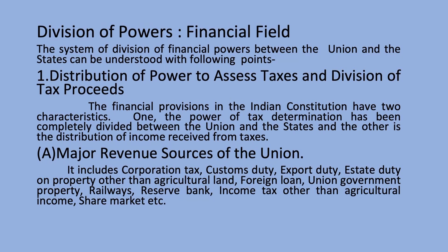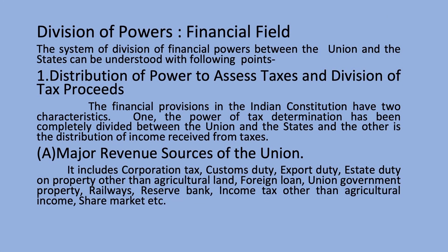Division of powers in the financial field: the system of division of financial powers between the union and the states can be understood through the following points. First, distribution of power to assess taxes and division of tax proceeds. The provisions relating to division of powers in the financial field are found in Part XII of the Indian constitution, Articles 268 to 293. There are two main systems: first is the assessment of tax, and the other is how the income from this tax is utilized.